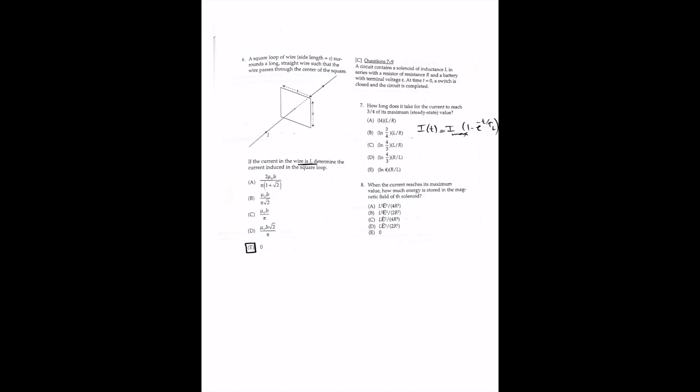For question 7, a circuit contains a solenoid of inductance L in series with a resistor R and a battery of terminal voltage E. At t = 0, the switch is closed. For this RL circuit, the current increases according to the standard equation. Setting I equal to three-quarters of its maximum value gives e^(−t/tau_L) = 1/4, so t = tau_L · ln(4) = (L/R)·ln(4). The answer is A.